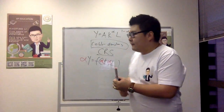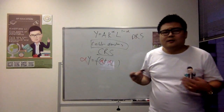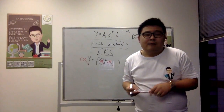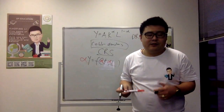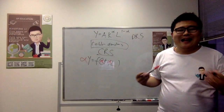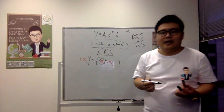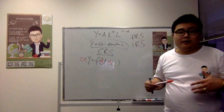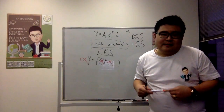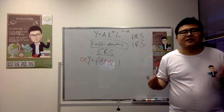Apart from that, we have decreasing returns to scale — if I double my input, my output will be less than double. And what about increasing returns to scale? Increasing returns to scale means that if I double my input, my output will be more than double. These are what we call the different scales in terms of the production function.